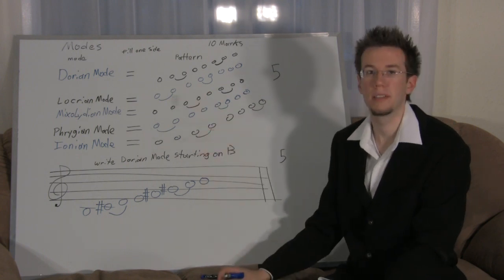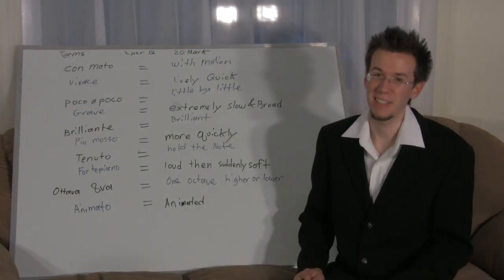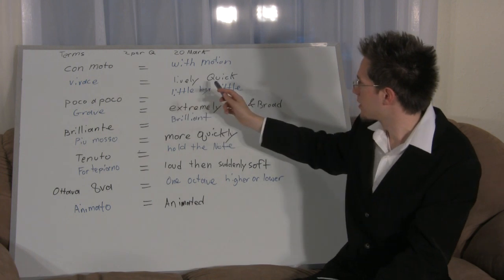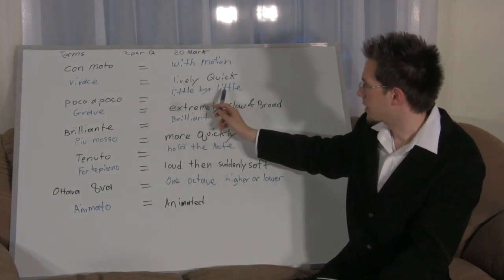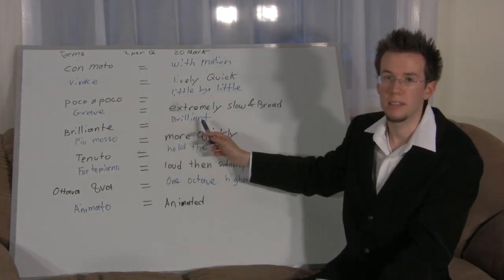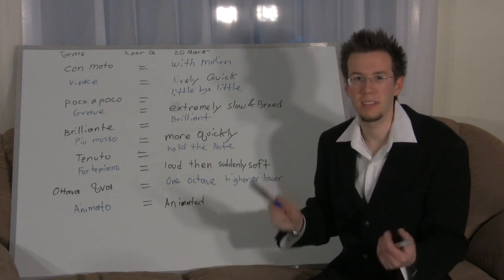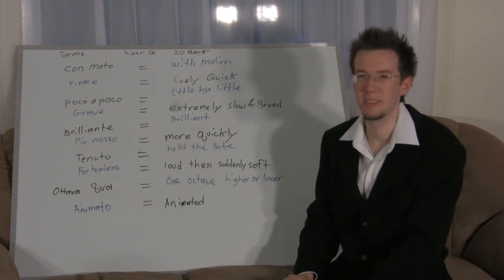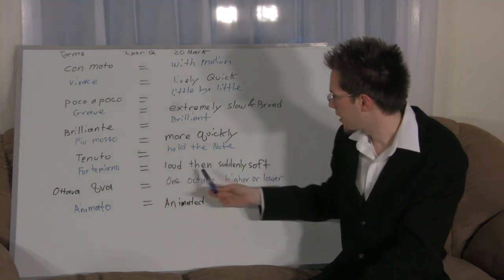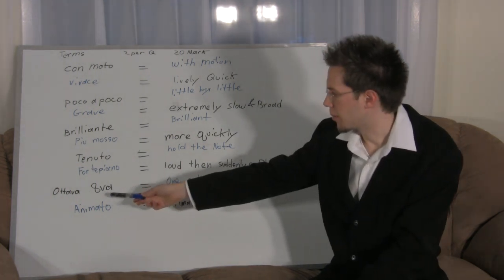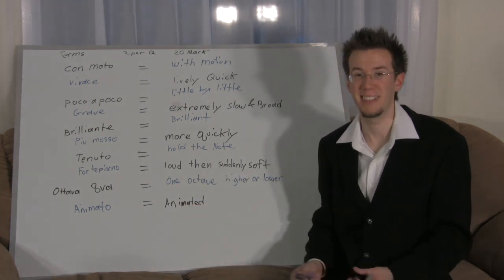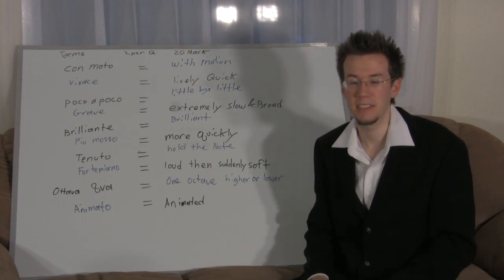Finally, the answers for terms: con moto means 'with motion,' vive means 'lively and quick,' poco a poco means 'little by little,' grave means 'extremely slow and broad,' brillante means 'brilliant,' piu mosso means 'more quickly,' tenuto means 'hold the note,' forte-piano means 'loud then suddenly soft,' ottava means 'one octave higher or lower,' and animato means 'animated.'